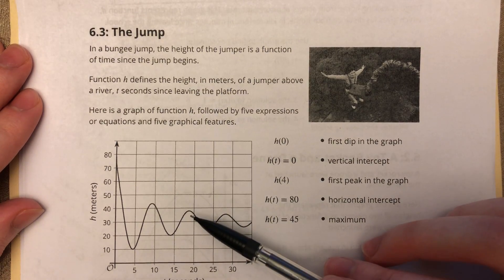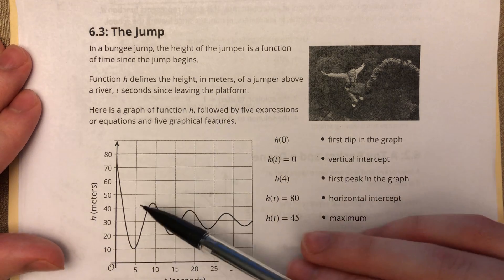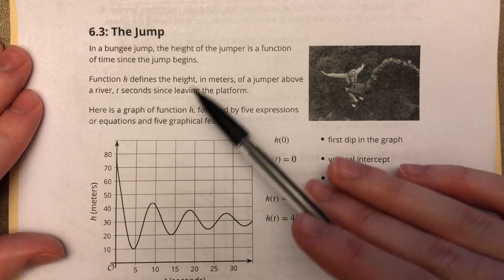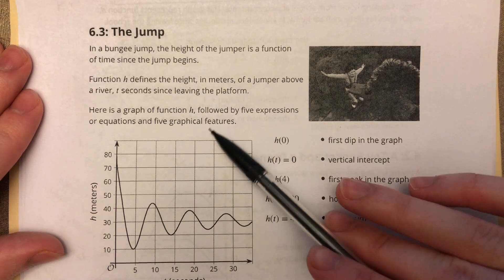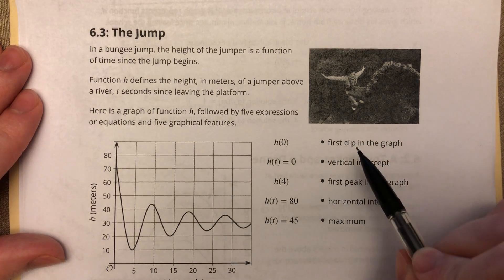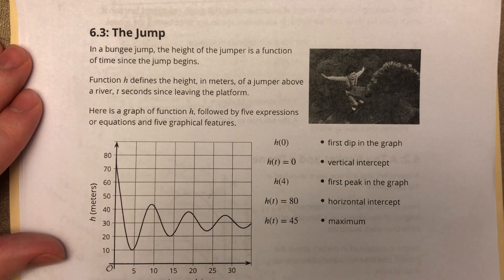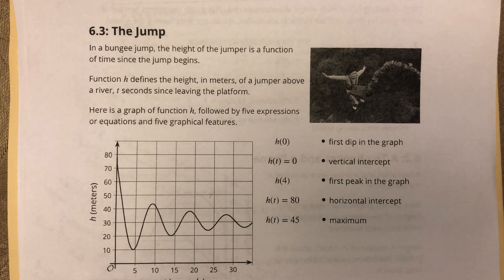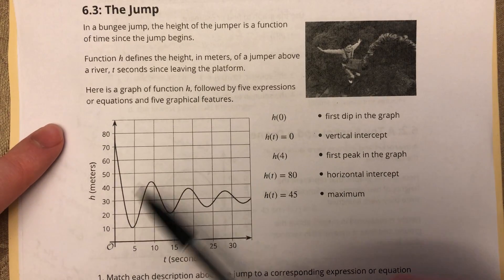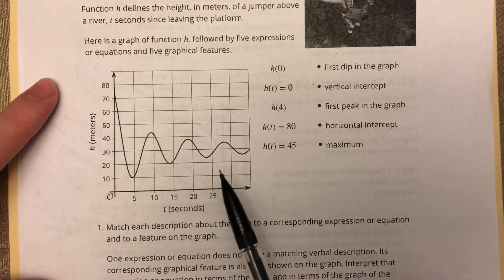So that's what a bungee jump is for those of you who weren't aware. And this graph sort of explains to you the path of the bungee jumper after they take that jump. So here's the graph of that function followed by five expressions or equations and five graphical features. They're talking about a specific point on this graph down here.